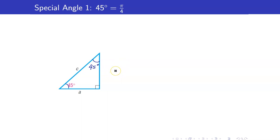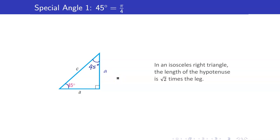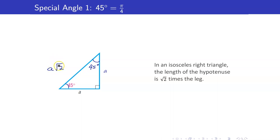B must be the same as A, giving us an isosceles right triangle. Recall that in an isosceles right triangle, if one of the sides is A, then the hypotenuse is just equal to the side times square root of 2.